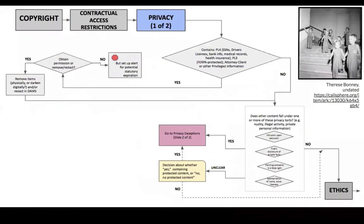Now let's turn to privacy. Privacy is handled differently than copyright because copyright is exclusively a question of federal law, whereas privacy is governed by both federal and state law, as well as some local campus policies. Federal privacy restrictions prevent disclosure of things like social security numbers, certain financial and medical information, student records, and other types of protected personal information, at least for a certain period of time. We don't have those concerns in the Bonney photos.